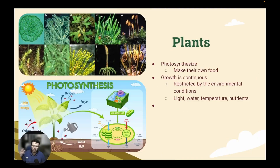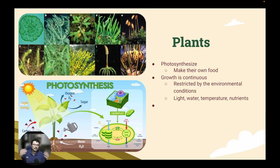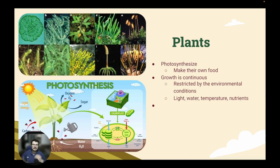So first off, what is a plant? A plant is just anything that photosynthesizes or makes its own food. So plants by definition are photoautotrophs, meaning that they basically collect sunlight and then process that sunlight into energy.